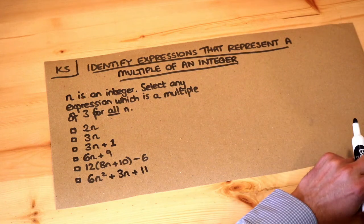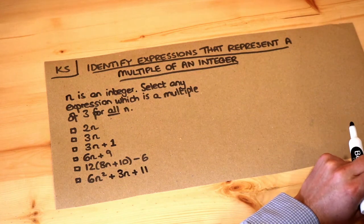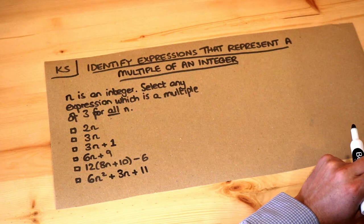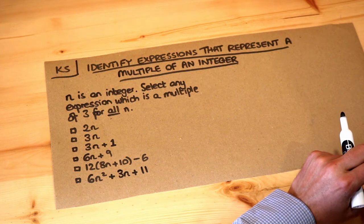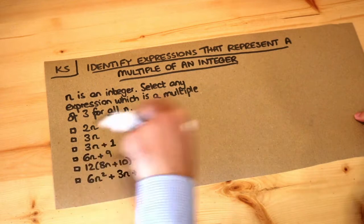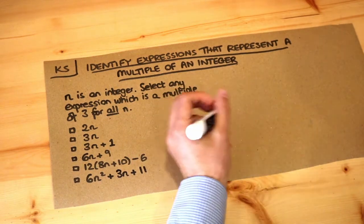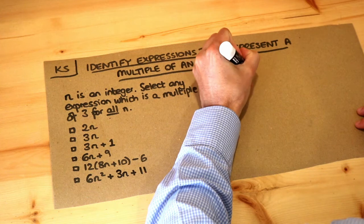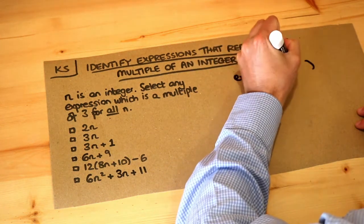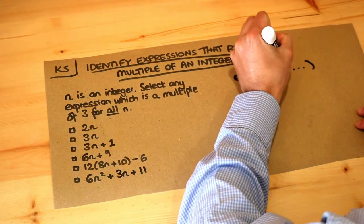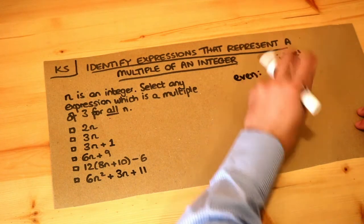Hello and welcome to this Dr. Roster-Math's key skill video on identifying expressions that represent a multiple of an integer. In the previous video we saw when we could guarantee that an expression was either odd or even. To show something was even we could just show that it was two times some integer — two times some whole number.